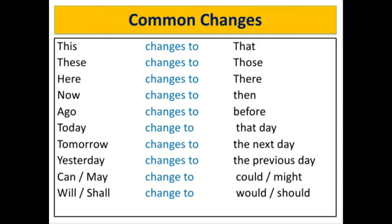Common changes: words showing nearness change to words showing remoteness. Specifically: 'this' changes to 'that'; 'these' changes to 'those'; 'here' changes to 'there'; 'now' changes to 'then'; 'ago' changes to 'before'; 'today' changes to 'that day'; 'tomorrow' changes to 'the next day'; 'yesterday' changes to 'the previous day'; 'can' and 'may' change to 'could' and 'might'; 'will' and 'shall' change to 'would' and 'should'.